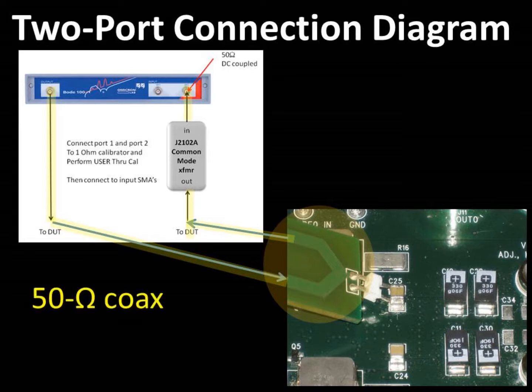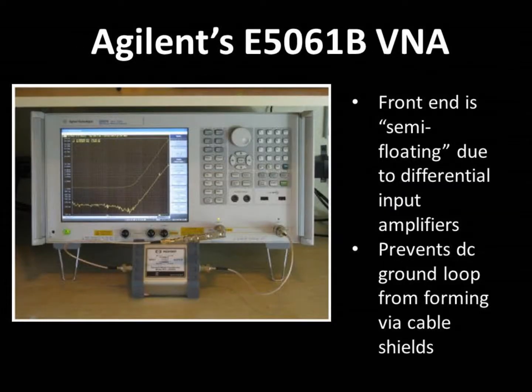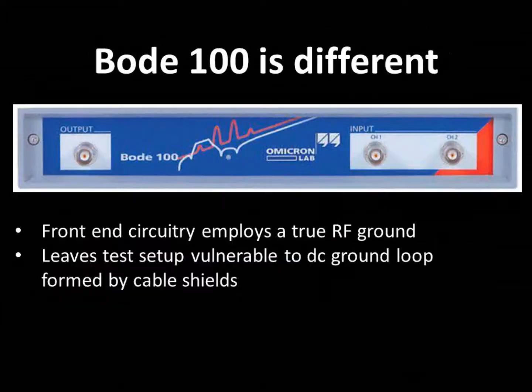For the highest fidelity, two 50-ohm coax cables are soldered directly to the DUT. Looking at the test setup, you might wonder why we use a common mode transformer. To answer this question, we need to understand the input/outputs of the analyzer. In the case of the E5061B analyzer, Agilent designed the front end with semi-floating input circuitry. This means they included differential amplifiers at the input with a low offset voltage capability. This is an elegant, though expensive, solution to a simple problem arising from a DC ground loop.